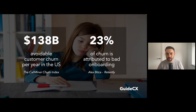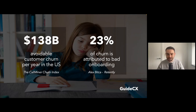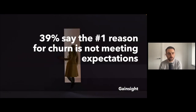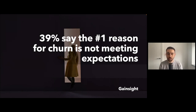There's a whole load of statistics around this, but what we need to do is focus on the customer and the value — and then those statistics will improve as a result. And one last thing from Gainsight: 39% say the number one reason for churn is not meeting expectations. So let's make sure that we know what the customer's expectations are and help to set them from the word go.